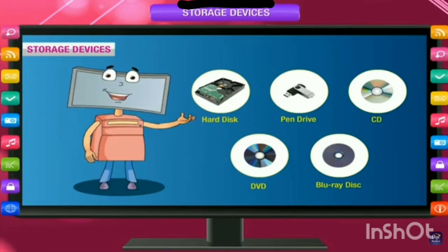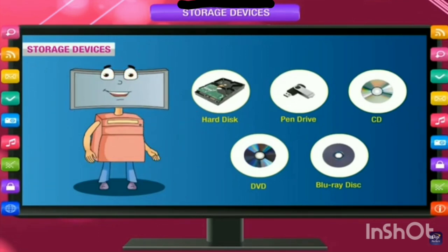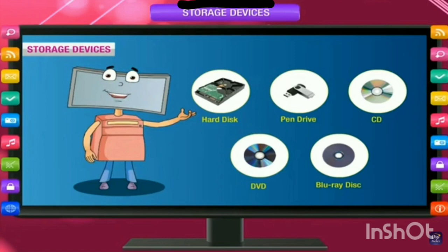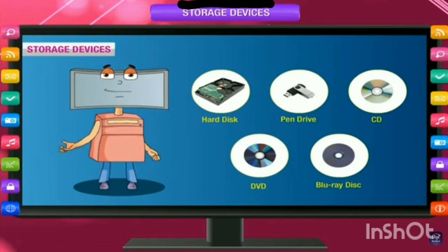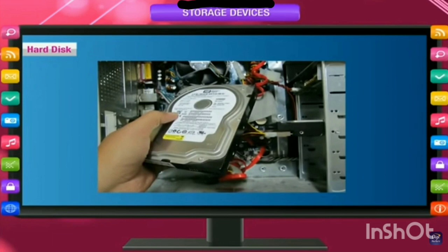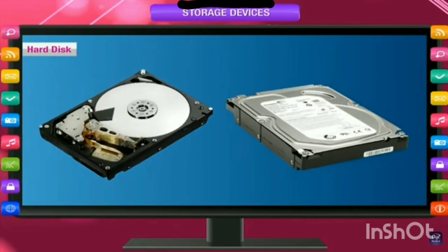All of you have seen these storage devices in your daily life. Today we will discuss all these devices one by one. As all of you know, CD, DVD, and Blu-ray disk look very similar but all have different purposes. First we come to the hard disk. Hard disk is placed inside the CPU and you can see it after opening the CPU cabinet. It looks as shown in the given picture. This hard disk is permanently fixed in the CPU cabinet, but if you want to take it out, it can be done very easily.